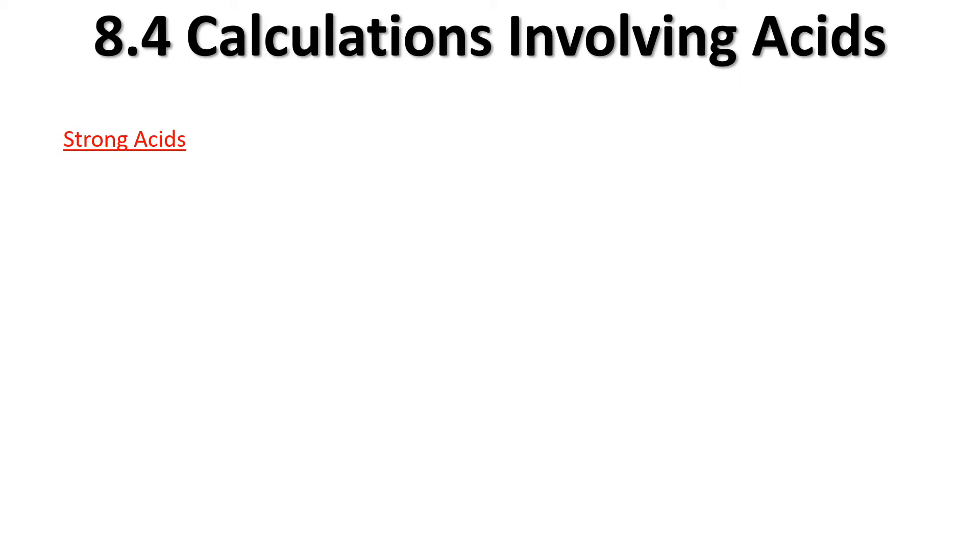We're going to start this lesson by looking at strong acids. There's the general formula of a strong acid. If we had a 0.2 molar solution of the acid when it started, we have a one-to-one ratio of everything in this equation. So if we have 0.2 molar of the strong acid to start with, then we're also going to have 0.2 molar of the hydrogen ions and whatever the negative atom is as well.